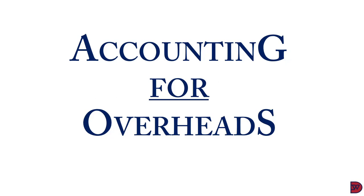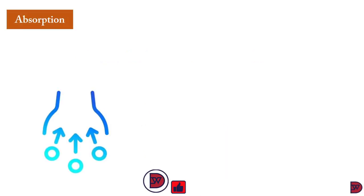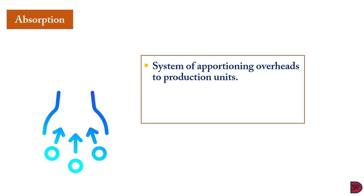Overheads are costs of an indirect nature necessary for the operation of a business. For production, the cost of a needle and the remuneration of the factory supervisor of a fashion business will be overheads. All non-production expenses are also deemed as overheads. Examples include rent, utilities, insurance, wages of supervisors and accountants. Absorption is the method of apportioning indirect expenses to a product to arrive at its overhead cost per unit.